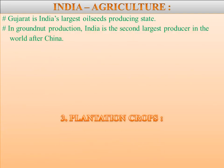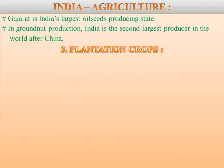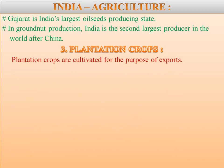Next we are going to learn about plantation crops, the third category. Plantation crops are cultivated for the purpose of exports. These are cultivated in large estates on hill slopes. Tea, coffee, rubber, and spices are the major plantation crops of India.